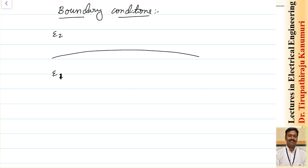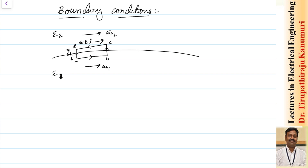For finding the boundary conditions for the electric field, I take the line integral. I will take the loop such that the enclosed area is on the left hand side when moving. Let us label the points as a, b, c, d, with length delta l and height delta h. The tangential component of electric field intensity is Et1 in the first medium and Et2 in the second medium.